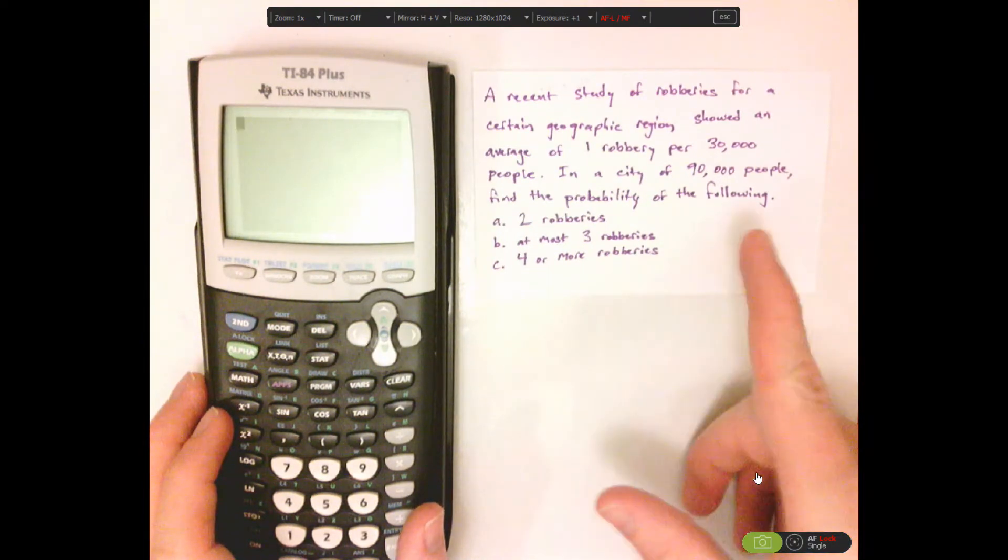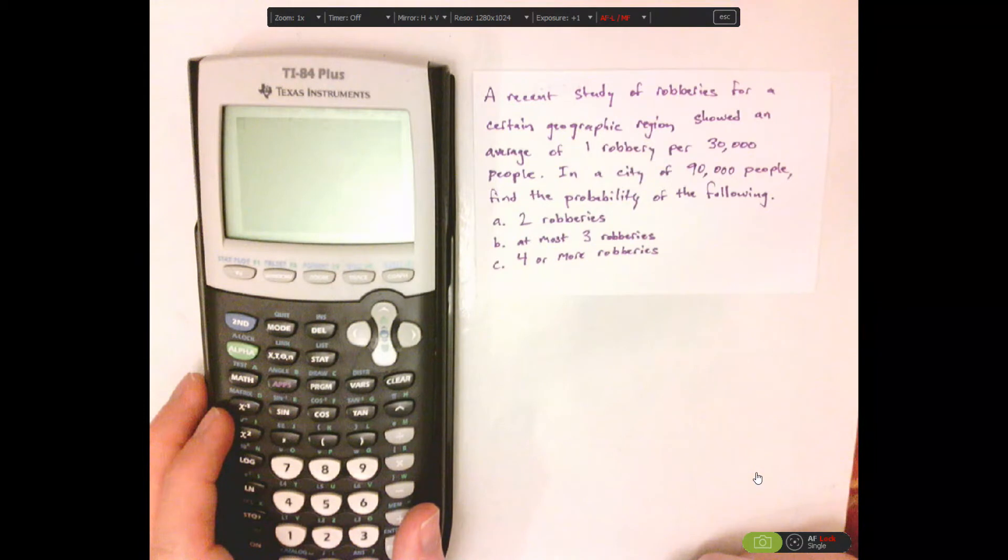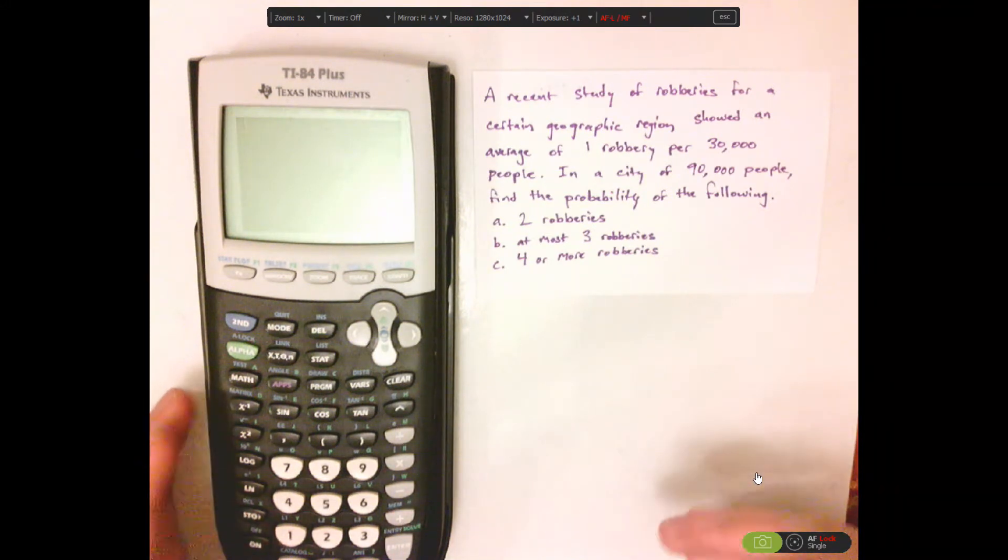Alright, so here it is. A recent study of robberies for a certain geographical region showed an average of one robbery per 30,000 people. In a city of 90,000 people, find the probability of the following: A, two robberies.